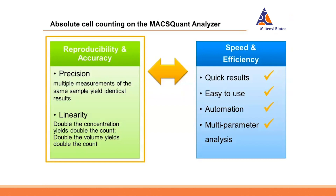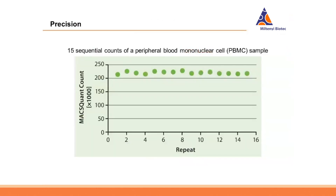Precision means that when we do the same measurement again and again, we expect to get the same results. An easy way to test this is to divide a sample into multiple tubes and measure them one after the other. In this particular example, we split peripheral blood mononuclear cells into 16 different tubes and performed cell counting. The cell count in all those measurements was highly reproducible — always getting more or less the same count from all tubes.